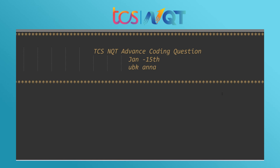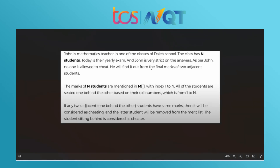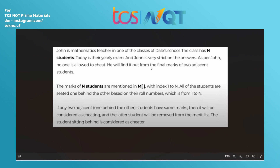So the question is: John is a mathematics teacher in one of the classes of Dell's school. The class has N students. Today is their early exam and John is very strict on answers. As per John, no one is allowed to cheat — he will find it out from the final marks of two adjacent students. The marks of N students are mentioned in array M with index 1 to N. Please be mindful: we start indexing from 1 to N, not from 0. All students are seated one behind the other based on their roll numbers from 1 to N.